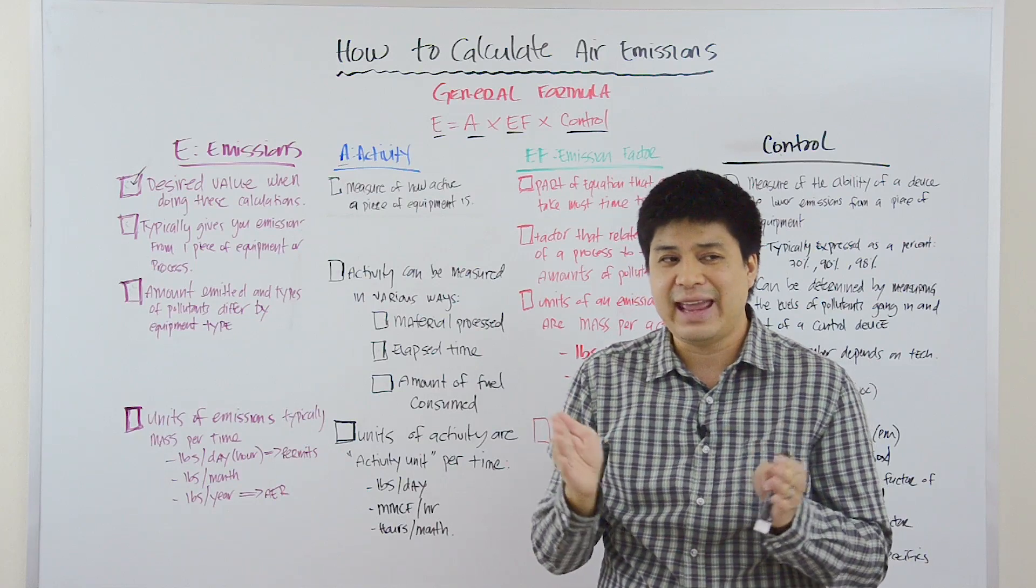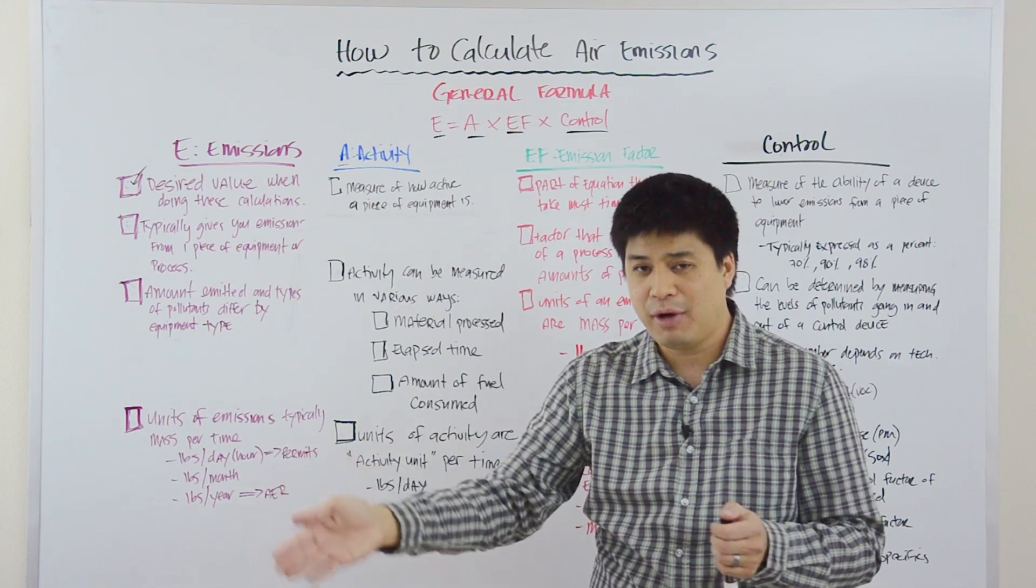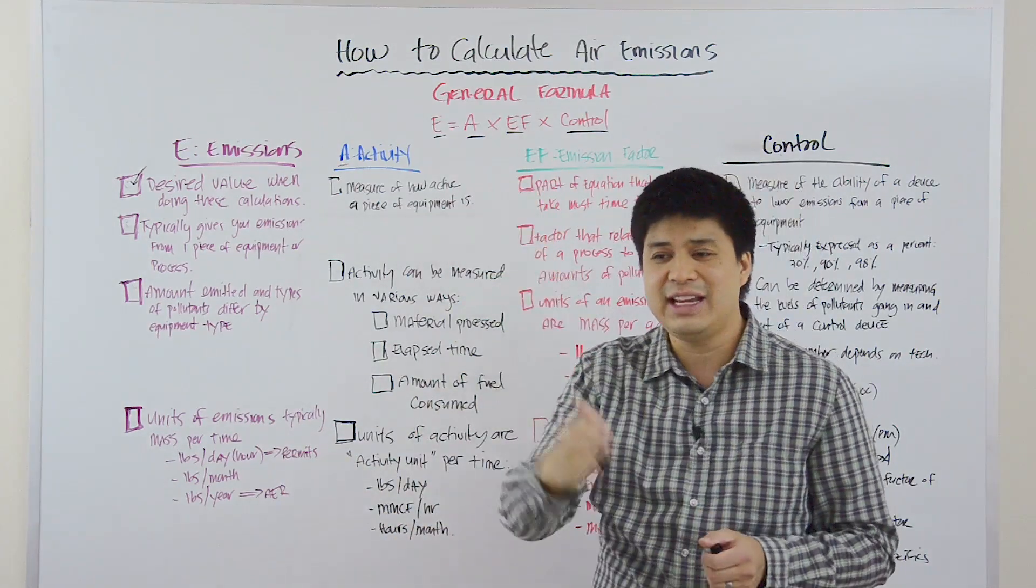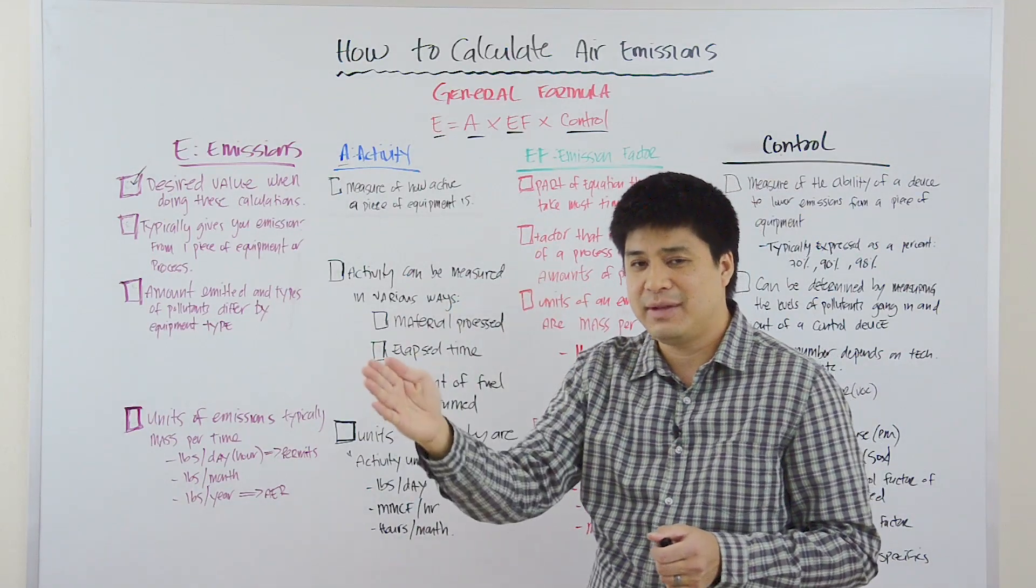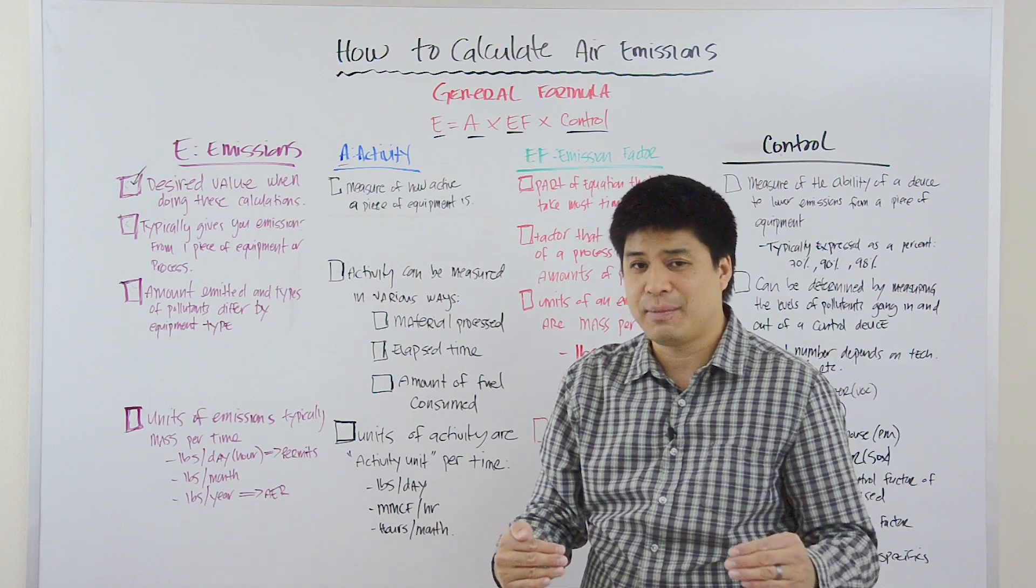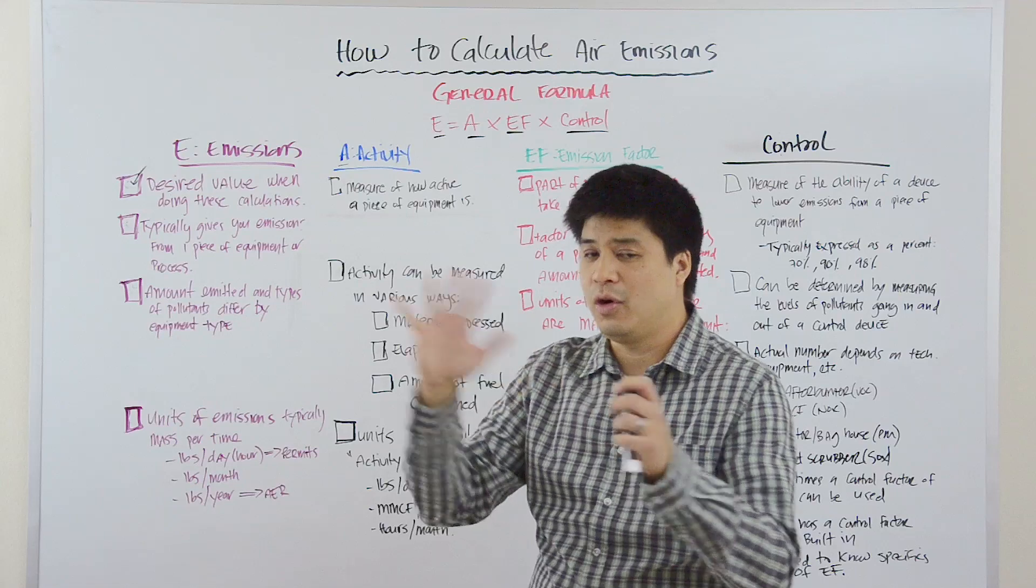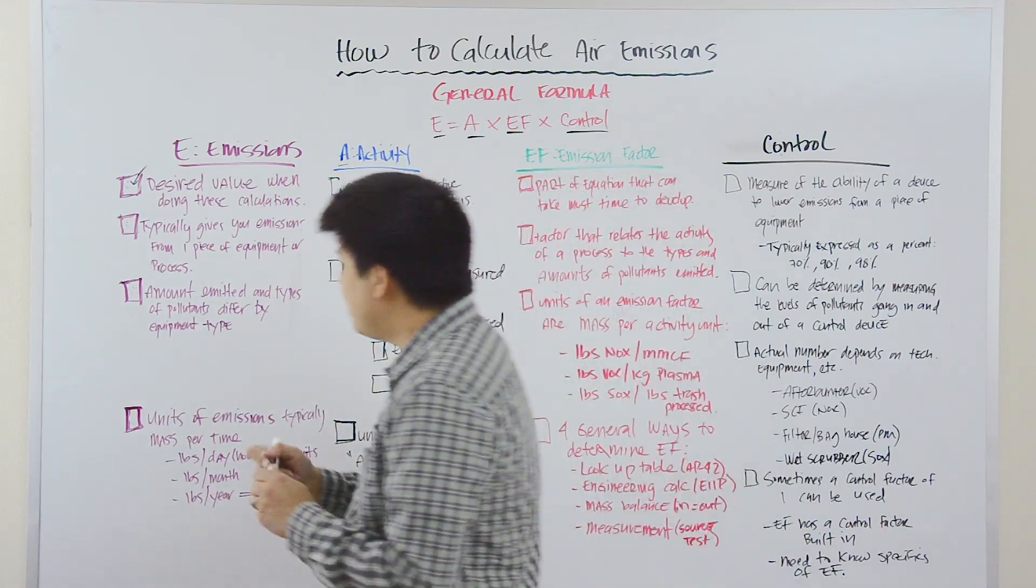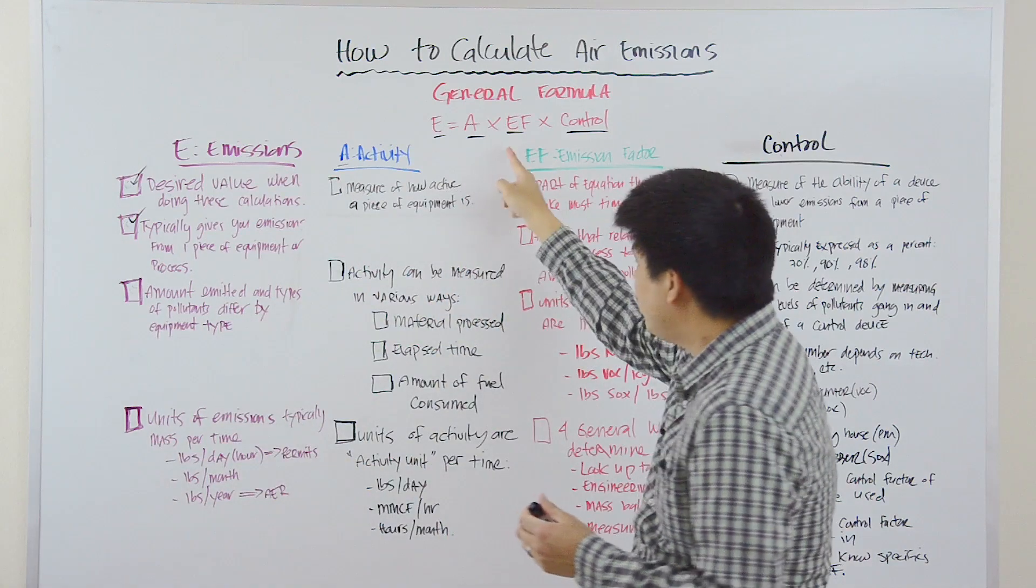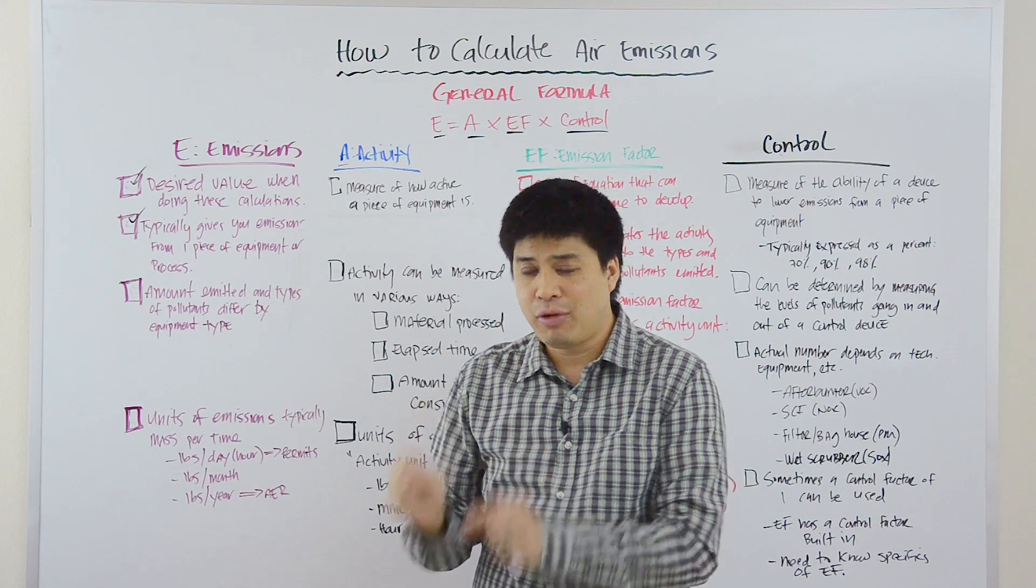And so if you had a complex facility with multiple pieces of equipment and then multiple processes, then you would do this same calculation for each piece of equipment, each piece of each process. And then you would sum across all the equipment, you would sum across all the processes, and then you will total at the bottom to get the emissions from the overall facility. The important thing here is that you recognize that this general equation is for one piece of equipment or one process.